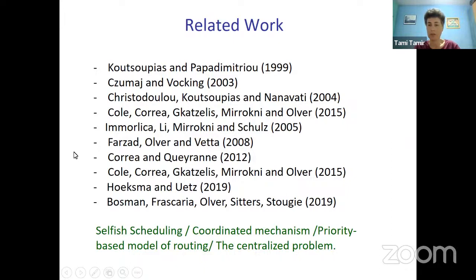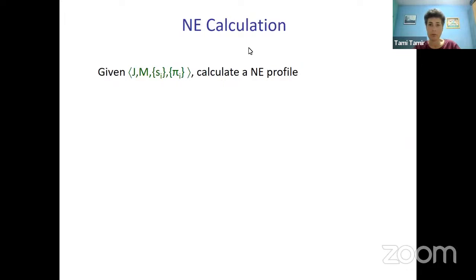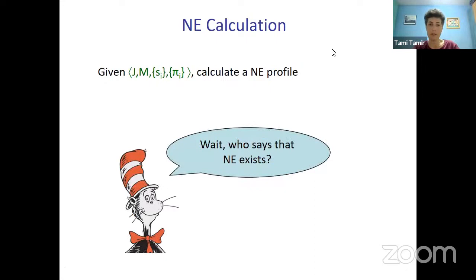Let's start with the problem of calculating Nash equilibrium. Our input is a game given by the set of jobs, the set of machines, the speeds, and the priority lists. We would like to calculate a Nash equilibrium. But there is a preliminary question: does Nash equilibrium exist at all? We cannot calculate it if we don't know whether it exists. I will show that there are games in which Nash equilibrium does not exist.